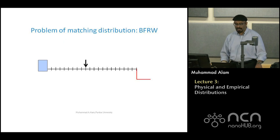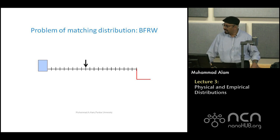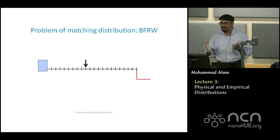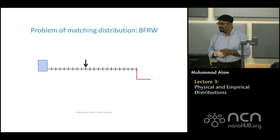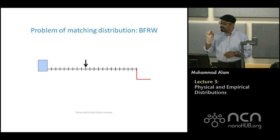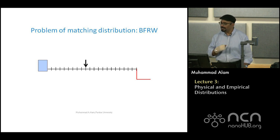Let me explain a distribution you have probably never seen — one that is very strange, because it does not have an average. We always think that every distribution has an average, but it turns out there is a whole class of distributions that do not. This is precisely how Amazon has gotten so rich — Amazon's distribution does not have an average, while Walmart's physical-store distribution does.